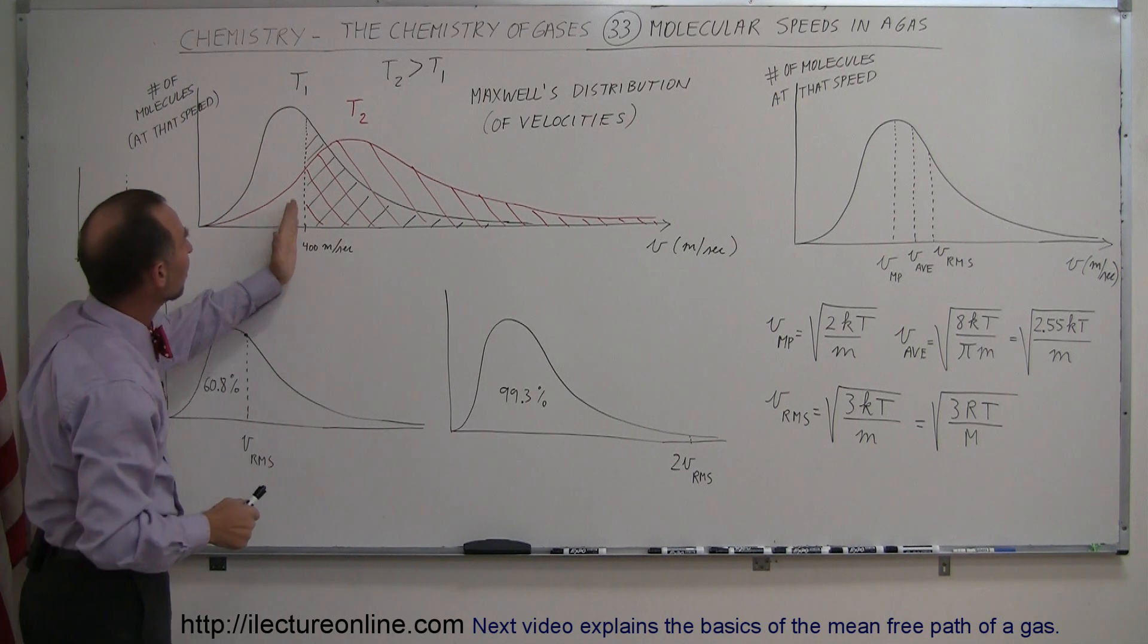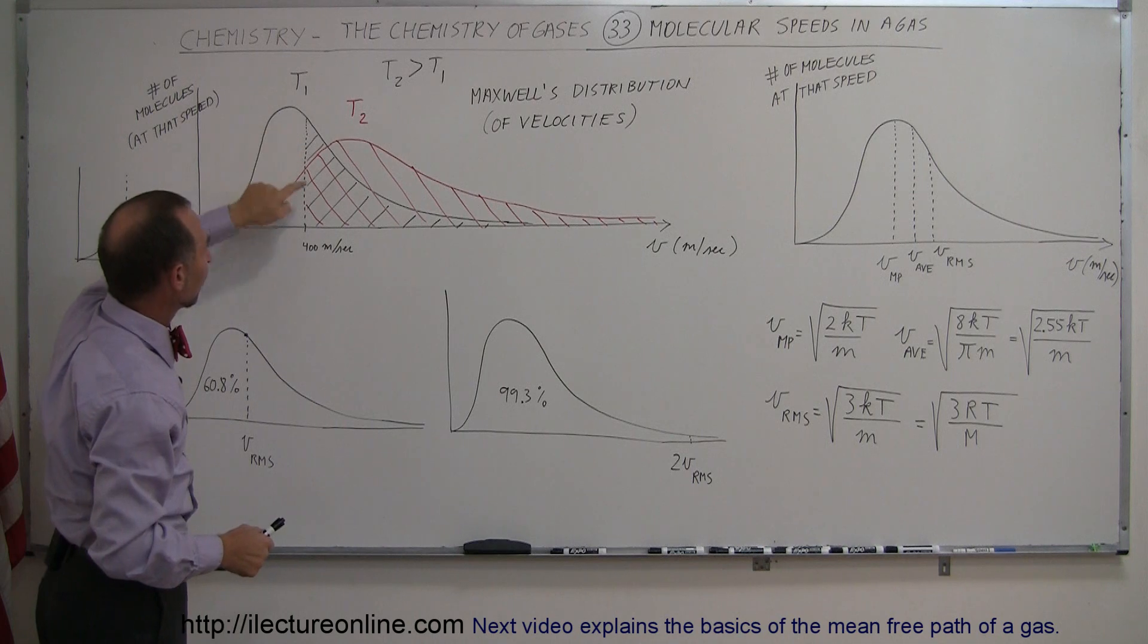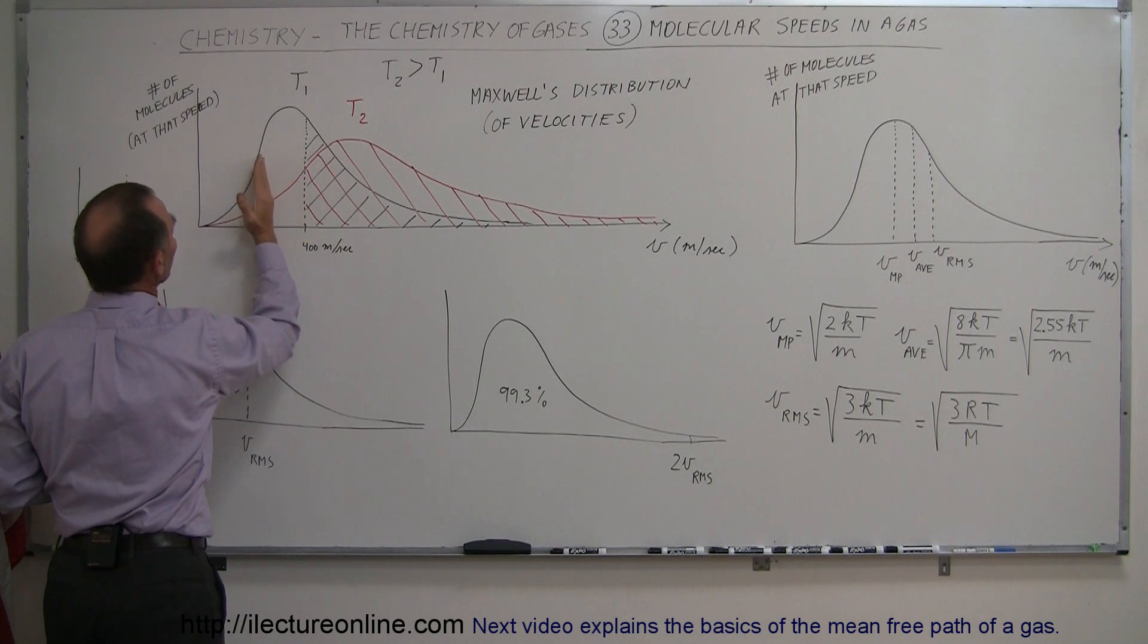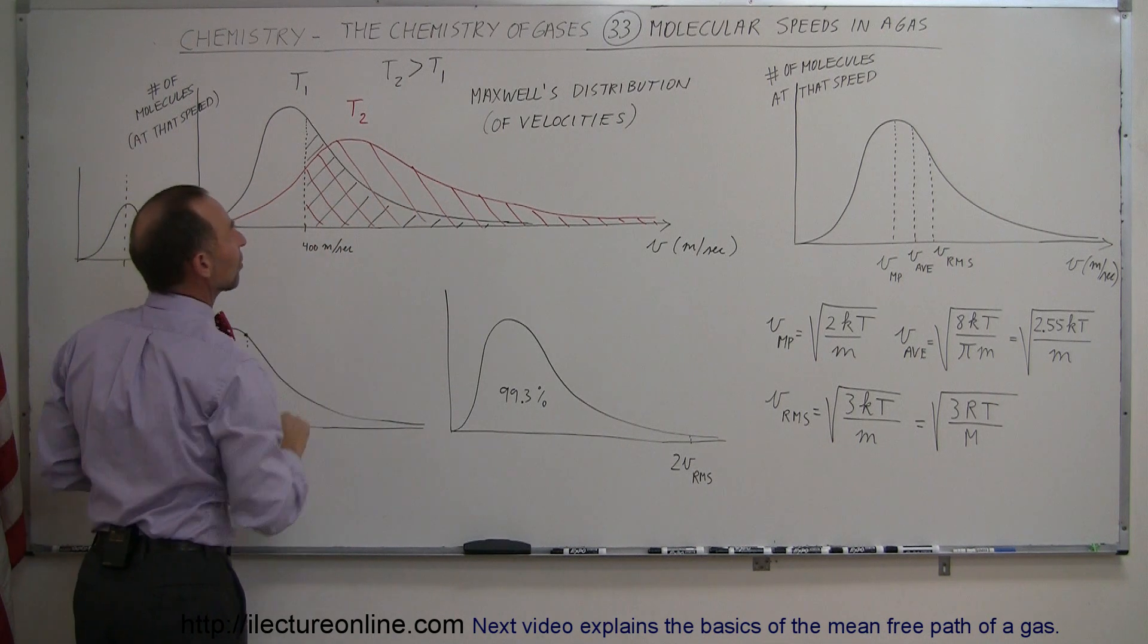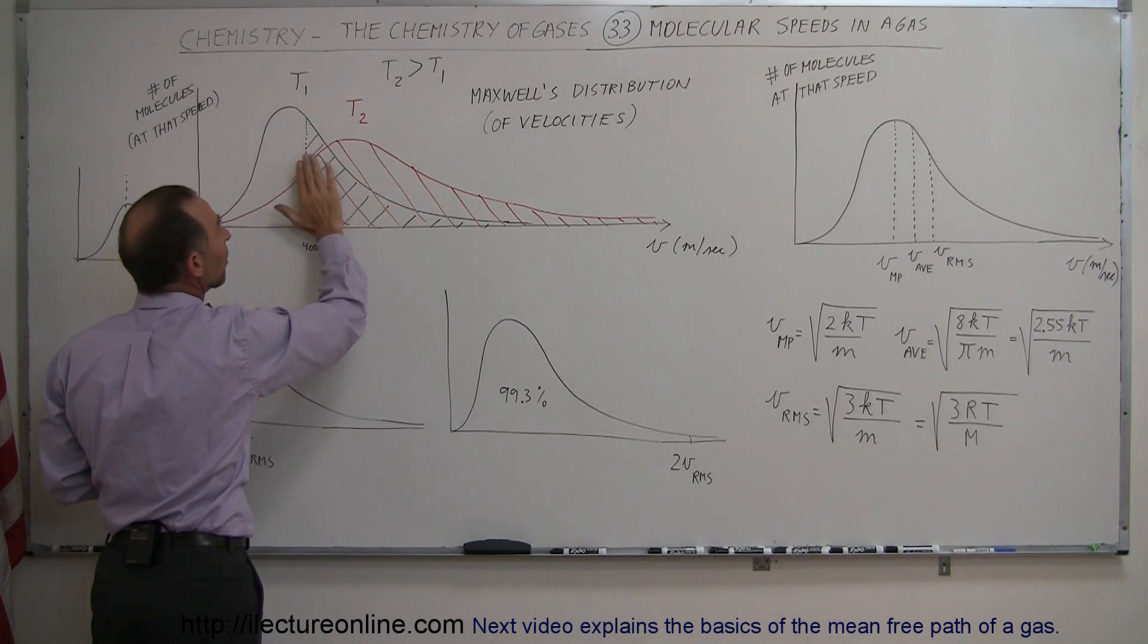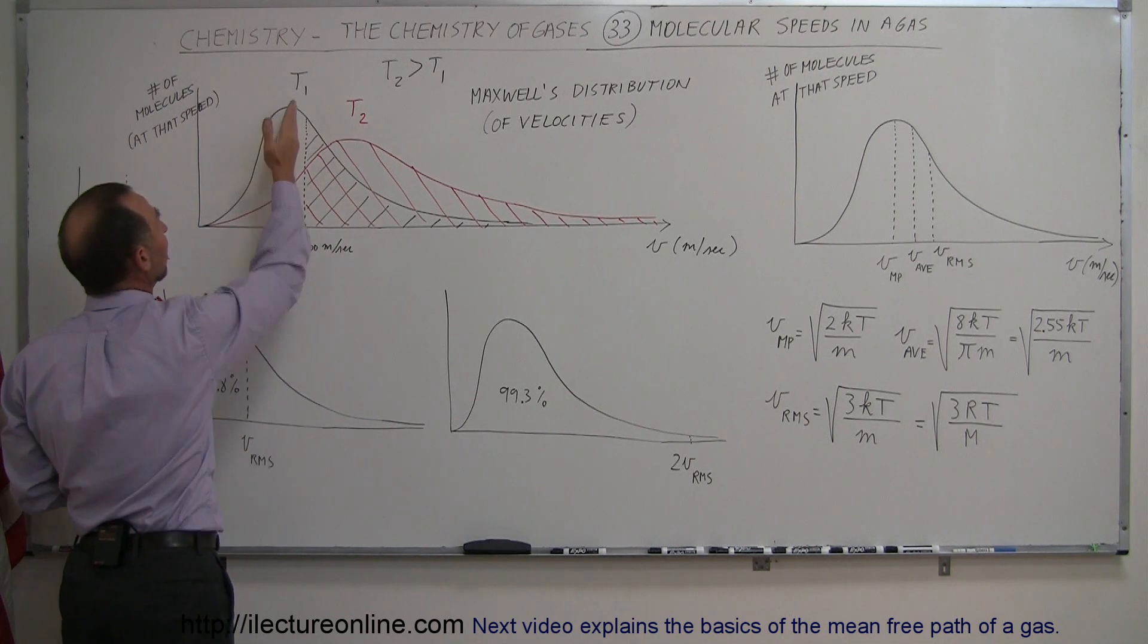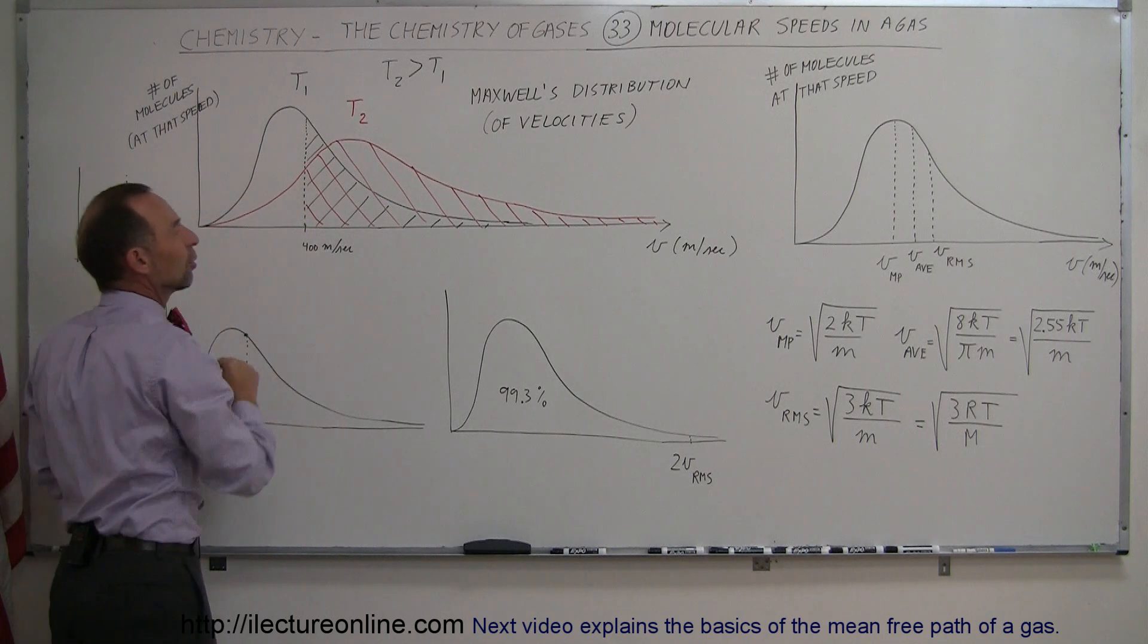Notice if this was the velocity of the molecules in this part of the curve at 400 meters per second, that means all these molecules travel slower than 400 meters per second and all these molecules over here travel faster than 400 meters per second. Notice as the temperature goes up, a much greater quantity of the total number of molecules travel faster than 400 meters per second, whereas in the first case with T1, a much greater quantity travel slower than 400 meters per second.